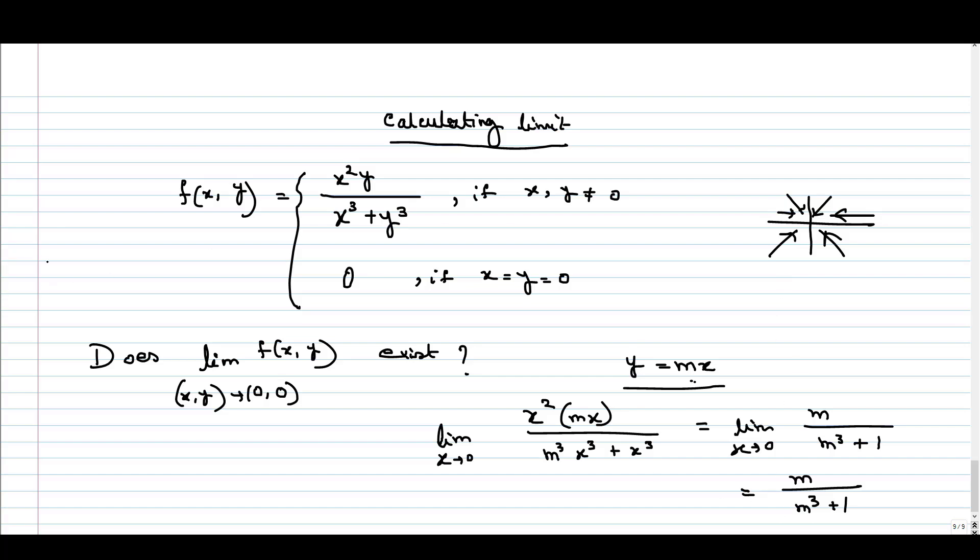Suppose we are approaching using y = 0, that means when m = 0, then the limit is 0. But when we are approaching via y = x, where m = 1, in that case the limiting value is m/(m³+1), that is 1/2.